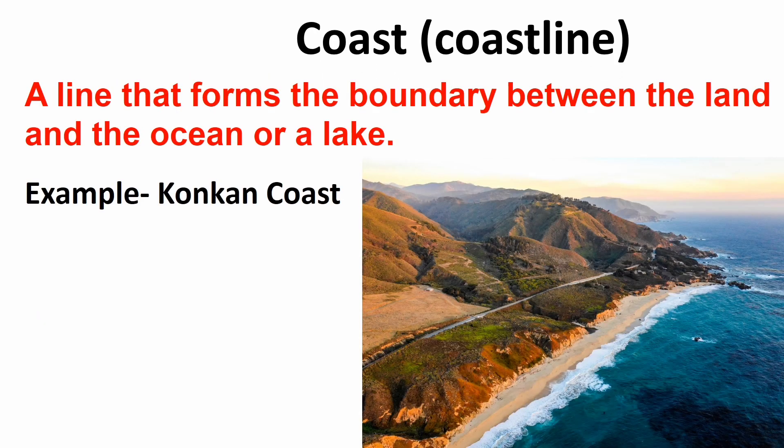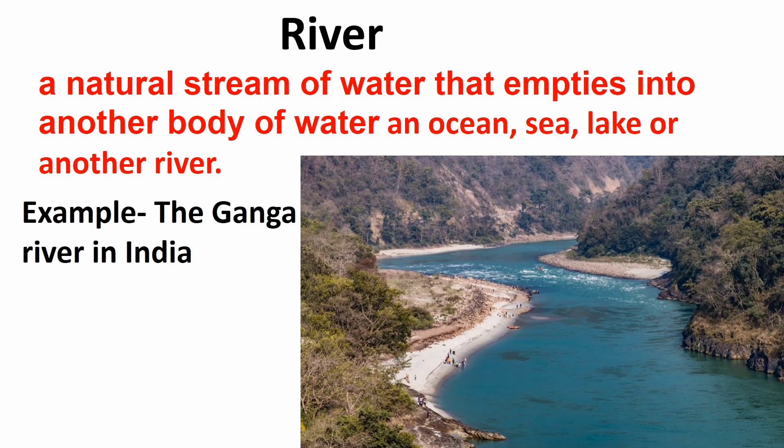Coast / Coastline: A line that forms the boundary between the land and the ocean or a lake. Example, Kokan Coast. River: A natural stream of water that empties into another body of water — an ocean, sea, lake, or another river. Example, the Ganga River in India.